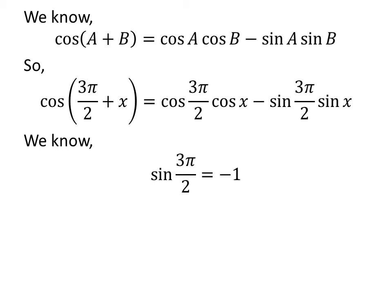We know the value of sine of 3 times pi upon 2 is equal to minus 1. The verification of this trigonometry identity is explained in the video appearing in the upper right corner, and the link is also given in the description section.